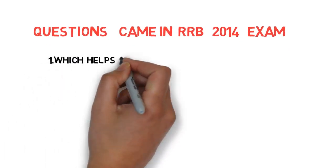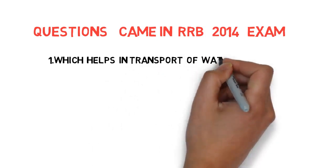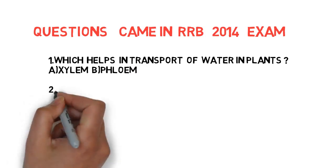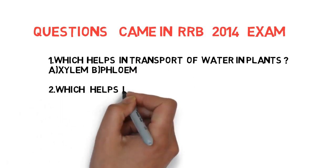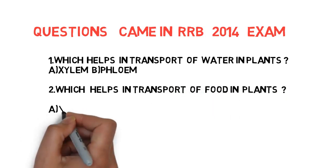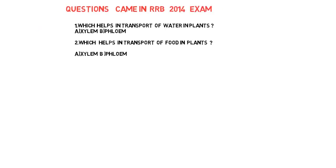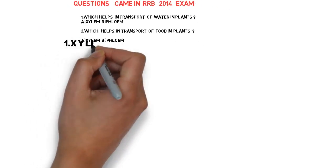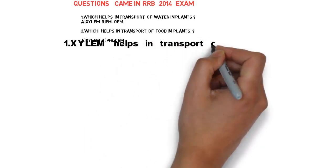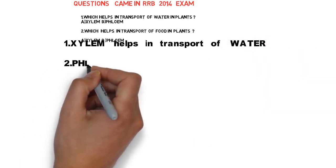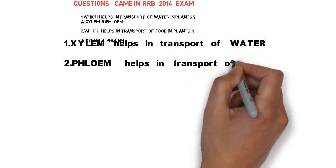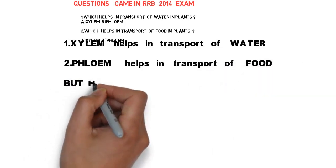First question: which helps in transport of water in plants? Option A: xylem, Option B: phloem. Second question: which helps in transport of food in plants? Option A: xylem, Option B: phloem. If you know these answers, it's good. If you don't, don't worry. The answer is: xylem helps in transport of water in plants, and phloem helps in transport of food in plants. But how to remember this? Both look similar and you will surely get confused.